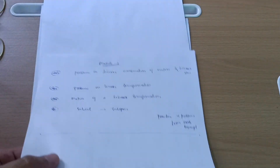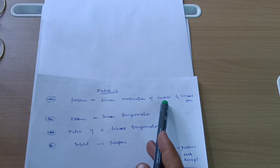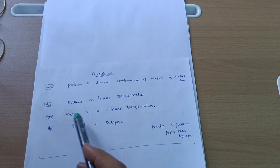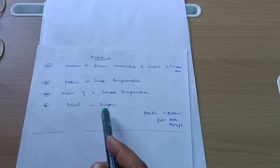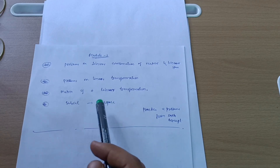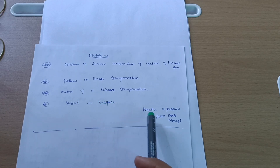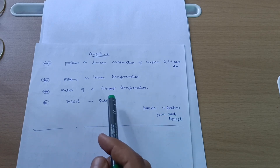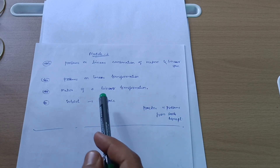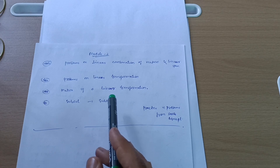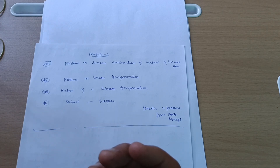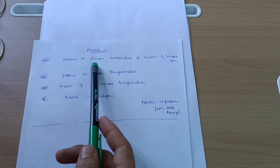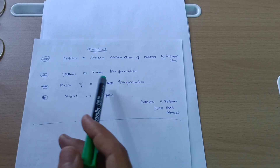Module 2 has problems on linear combination of vectors, linear span, linear transformation, matrix of a linear transformation, and subspaces — where a subset is given and you have to show it is a subspace of R³. Go through these questions and practice four problems from each concept. You can leave one module from the mathematics subject, so make sure you have full hold on the three passing modules and Module 3 (unit step function and Laplace transform), then Module 2 becomes optional if you are just aiming to pass.